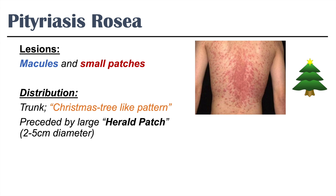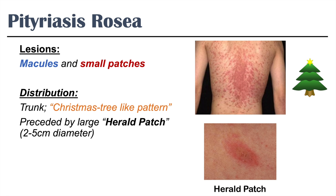You'll see one patch somewhere on the trunk — a larger patch, about 2 to 5 cm in diameter, called the herald patch. And then from there, macules and small patches will actually radiate outward. So that's the preceding herald patch, and it may look like this on presentation.